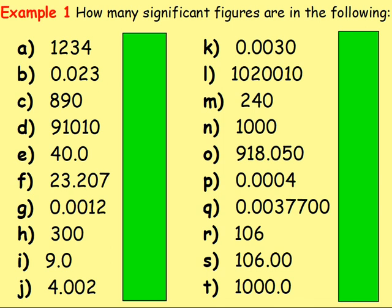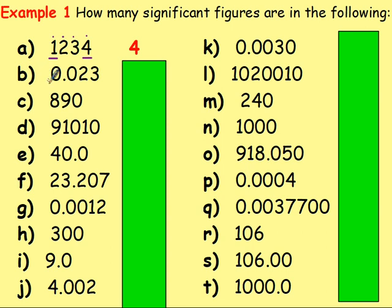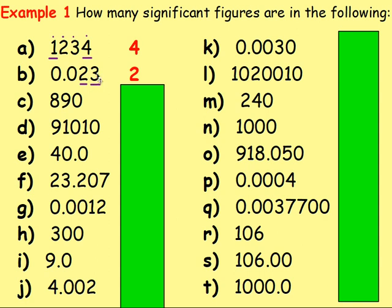Let's try some more examples. Example 1: how many significant figures are in the following? With 1,234, start at the first number that is not a 0, which is the 1. The number ends before the decimal, so we count up to the last number that is not a 0. We can see there are 1, 2, 3, 4 significant figures. With the next one, feel free to pause this as you go through it. Start at the first number that is not a 0. It ends after the decimal point, so go up to the very last digit. There are 2 numbers there, so there are 2 significant figures.